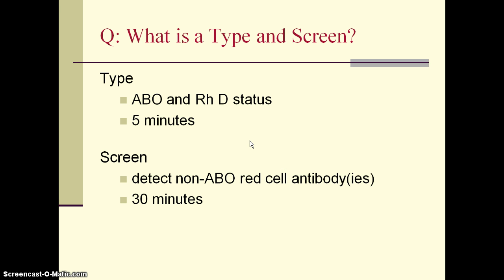In Part A we talked about general blood product utilization and what products are available in the blood bank, and we also touched on IVIG. In Part B we will start on type and screen and cross match and then move on from there.